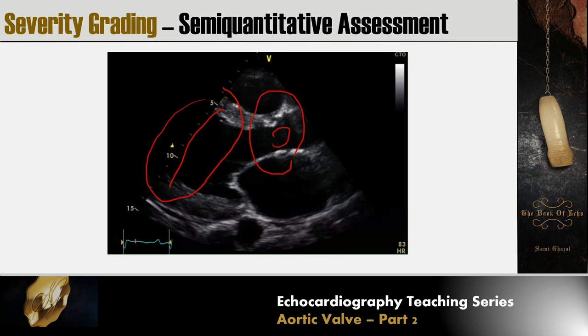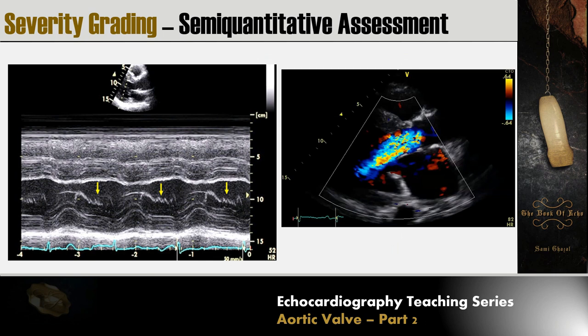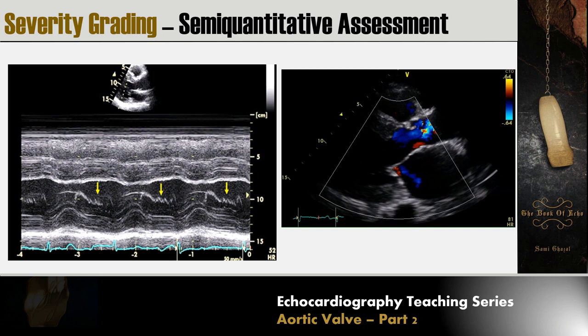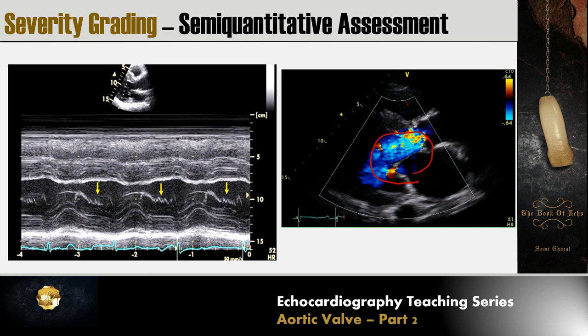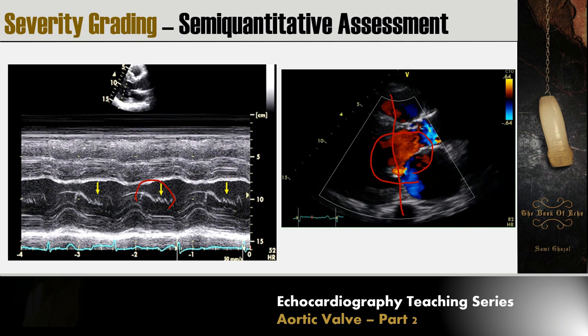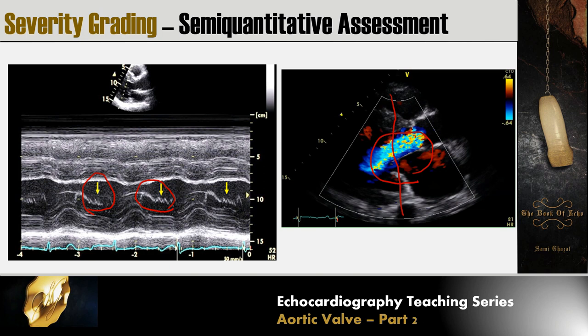LV function is also important; after a period of severe aortic regurgitation, LV systolic function will become impaired. Moving from 2D to M-mode, if significant aortic regurgitation is hitting the anterior mitral leaflet, placing an M-mode there will show fluttering waves at the anterior mitral leaflet, indicating significant aortic regurgitation.